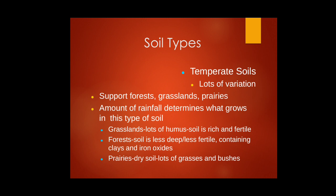Temperate soils support forests, grasslands, and prairies; the amount of rainfall determines what grows. Grassland soil has lots of humus and is rich and fertile. Forest soil is less deep and less fertile, containing clay and iron oxides, because high trees and shrubs make the soil beneath them tough to break down. Prairies are usually dry locations supporting grasses and bushes.